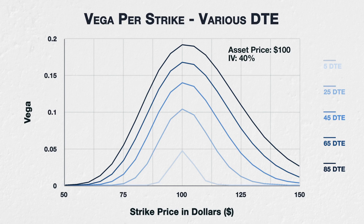Assuming all else remains equal, vega decreases as time passes. The more time is left until expiry, the higher the vega will be for all strikes. And the less time is left until expiry, the lower vega will be for all strikes.